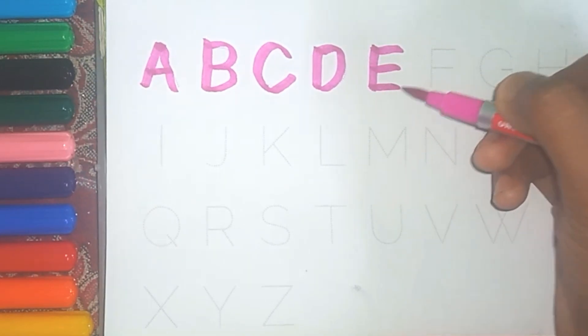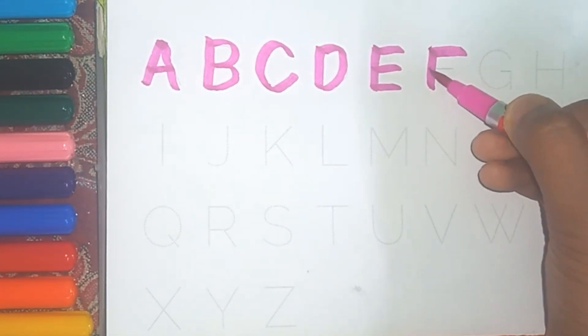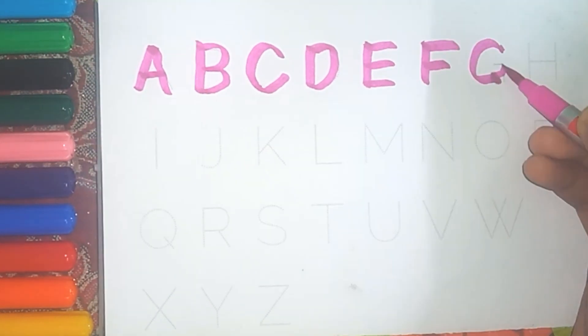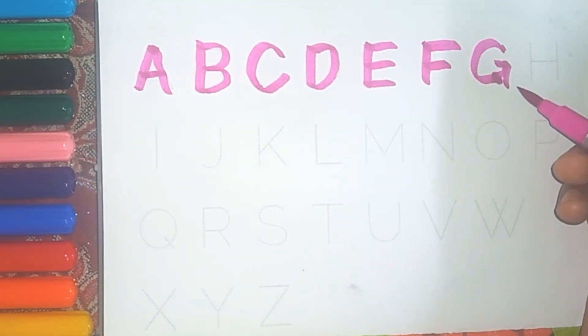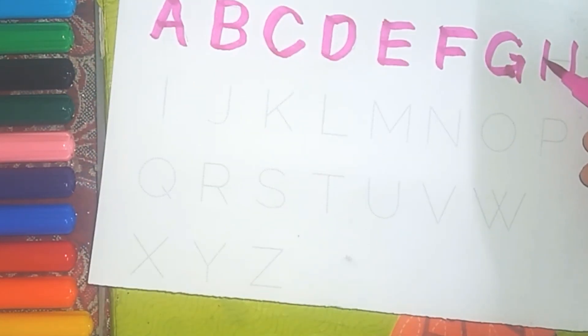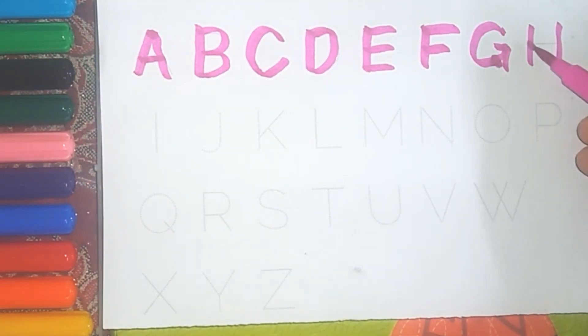E. E for Egg. F. F for Fish. G. G for Goat. H. H for Horse.